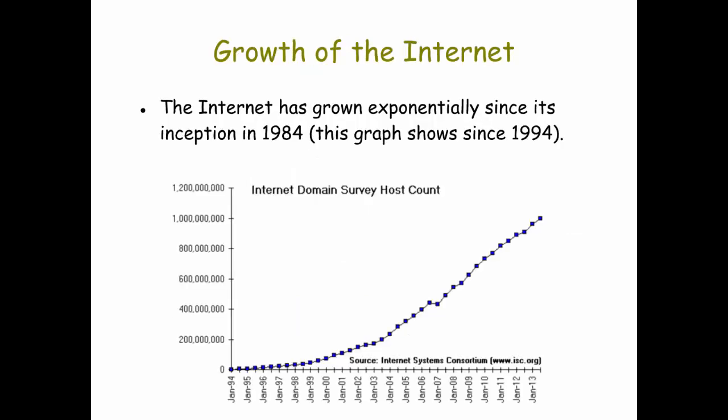Because the web and the Internet are based on open standards, it has really allowed the Internet to grow exponentially — everybody can access those standards to build their own part of the Internet and the World Wide Web. As you can see in this graph, from 1994 to 2013, the Internet grew exponentially, increasing quite quickly over that period of time. Open standards were a key component for the growth of the Internet.